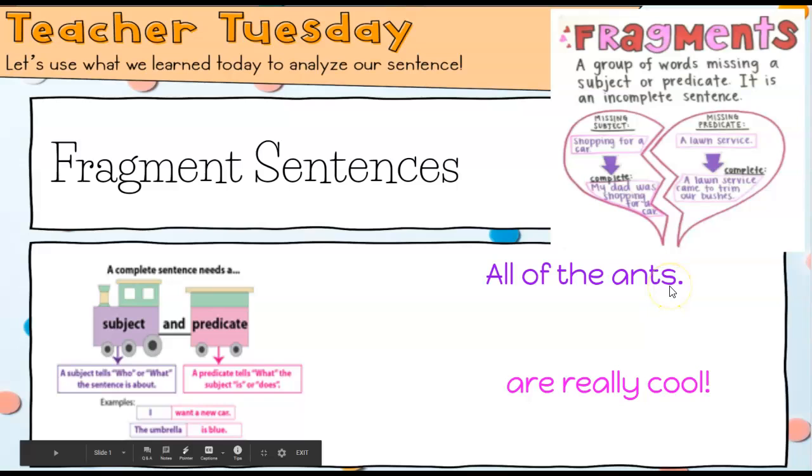It says all of the ants. So is that naming the subject who it's about or the predicate? All of the ants. Okay this is just the subject, it's all of the ants, but what I don't know is the predicate, what are they doing? All of the ants are, you have to complete that sentence. So this is a fragmented sentence. It's missing the predicate.